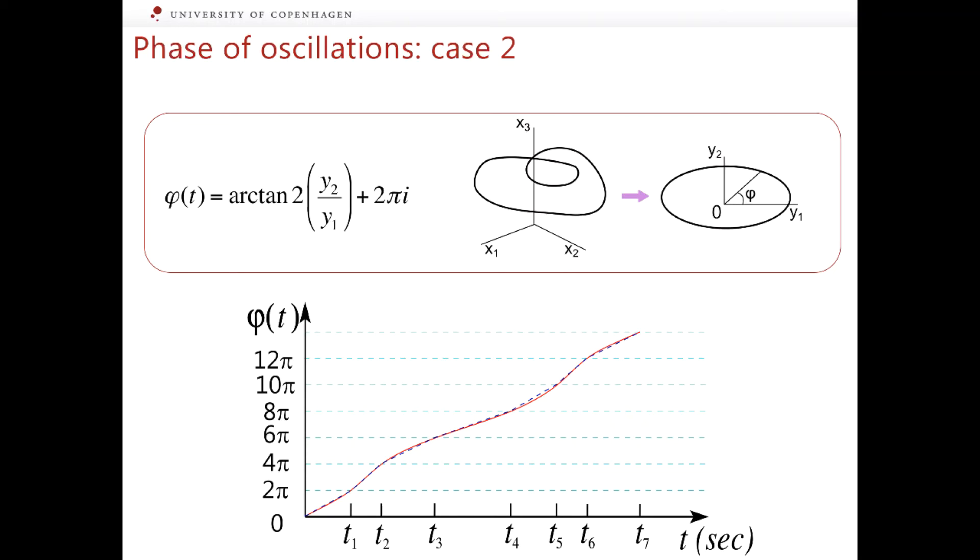However, unlike the first phase, it is differentiable at every point. Like the first phase, during a single oscillatory cycle the second phase increases by 2π but unlike the first phase it grows non-linearly.